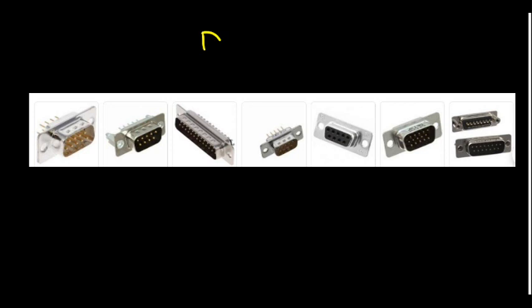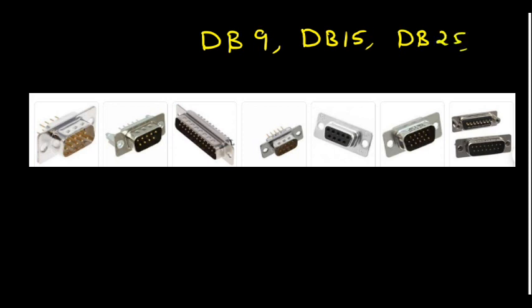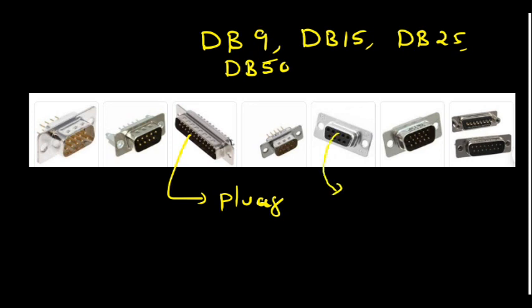These are the DB connectors — we call this DB9, DB15, DB25, DB50. These are DB type connectors. If pins are there, those are known as the plug, and if holes are there, then it is a socket — just like our home socket and plug.